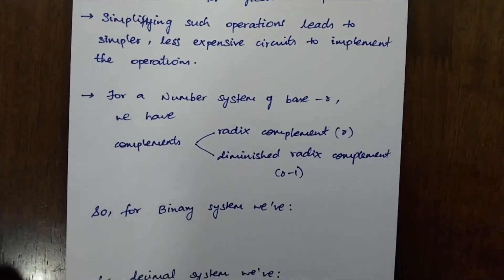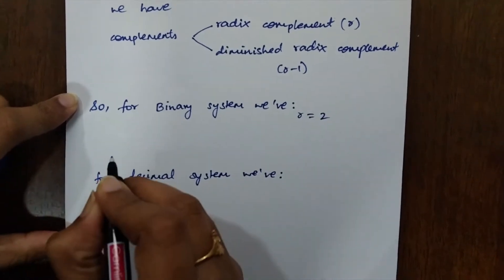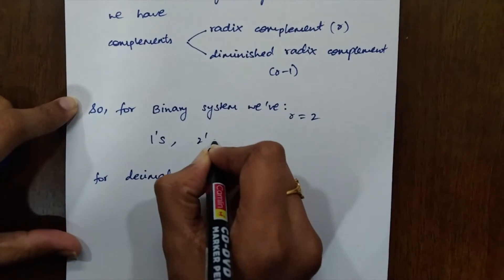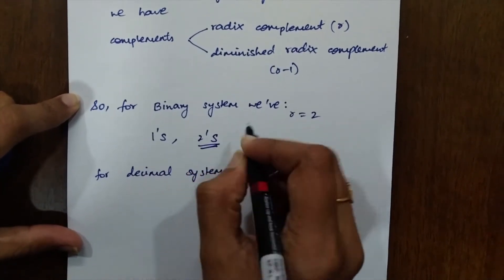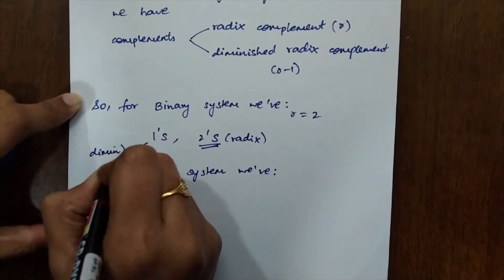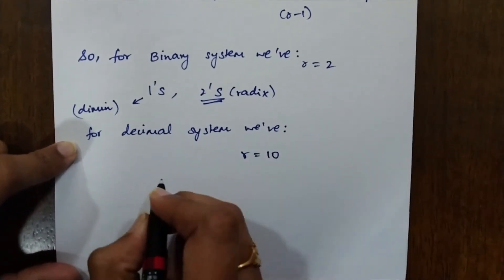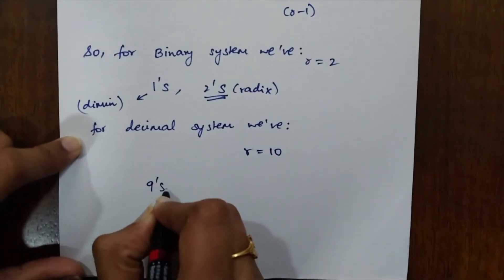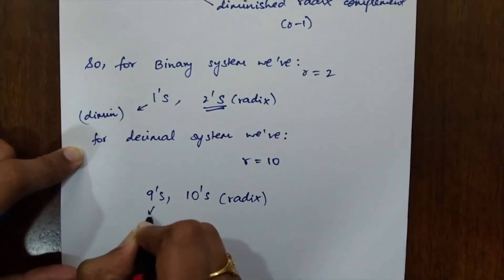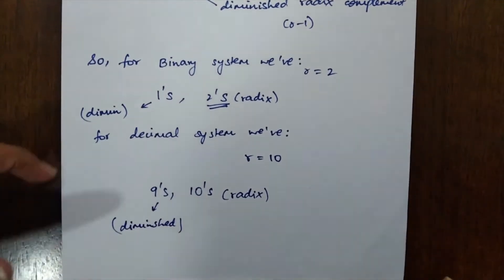For binary systems, r equals 2, so the complements we have are the 1's complement and the 2's complement, where the 2's complement is a radix complement and the 1's complement is a diminished radix complement. For the decimal system, r equals 10, so we have the 9's complement and the 10's complement. The 10's complement is a radix complement, and the 9's complement is a diminished radix complement.